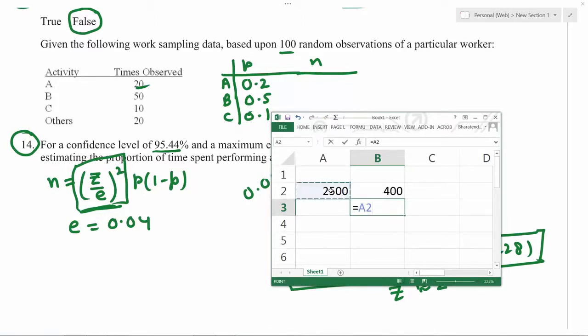Similarly, this number times 0.5 and times 1 minus 0.5 is also 0.5, so 625. And the last one will be this number times p is 0.1 and 1 minus p is 0.9.